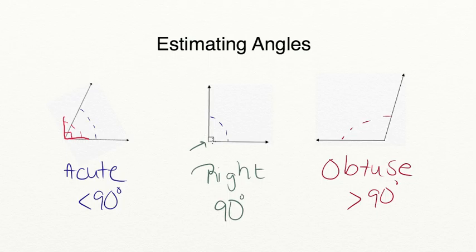Our middle angle is already done for us because we have a square in the corner, which means it's a right angle. Let's move over to our obtuse angle. We're going to draw a 90-degree angle and put our square in the corner. As you can see, the 90-degree angle does not completely span the distance that this obtuse angle does, so this larger angle is clearly bigger than 90 degrees, which means it's obtuse.